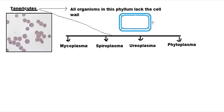Penicillin targets and destroys the cell wall of bacteria. So if this organism doesn't have a cell wall, penicillin has nothing to target, making them resistant to it. However, we can still use medicines like chloramphenicol, streptomycin, and erythromycin to deal with these organisms.